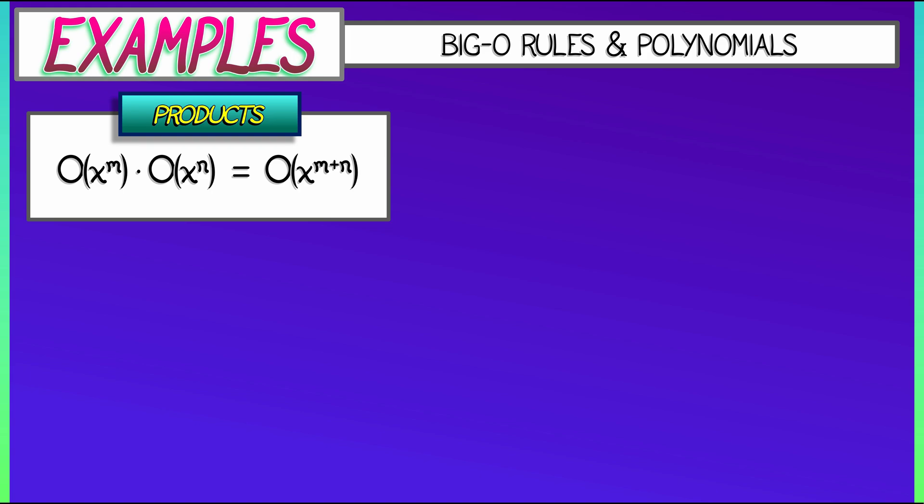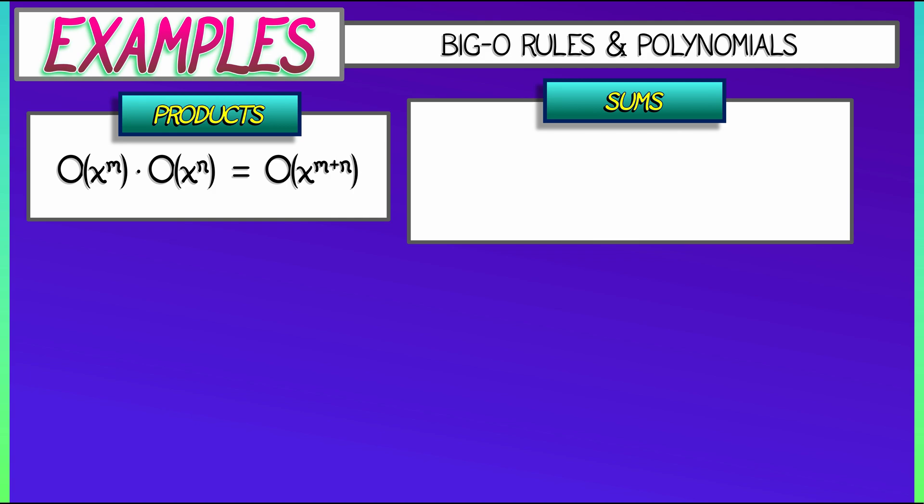What does that summation rule look like? What it looks like is if we take Big-O of x to the m and add to it something in Big-O of x to the n, then what we get is in Big-O of x to the something. Where that something is in the limit as x goes to zero, we get the minimum between m and n.